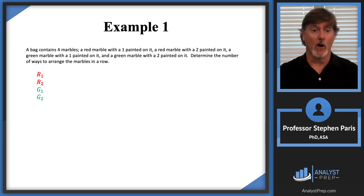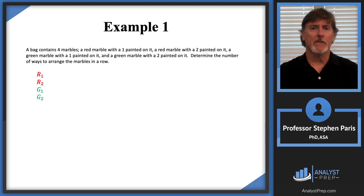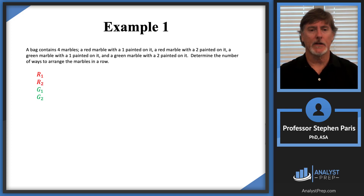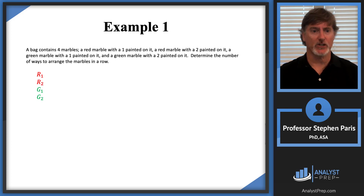In this example, we have a bag of four marbles: a red marble with a one painted on it, a red marble with a two painted on it, a green marble with a one painted on it, and a green marble with a two painted on it. The idea is that I want each marble to be distinguishable from the others — if I see a red marble, one has a one painted on it and one has a two, so I can see they're different. The question is: how many ways can we arrange the marbles in a row?